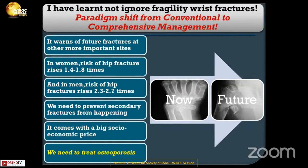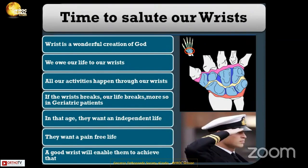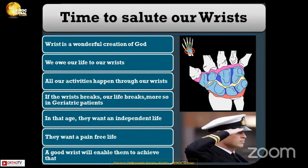We need to prevent secondary fractures — it comes with a big socioeconomic price. Medical-legal issues could also be a big problem: if a patient who had a wrist fracture develops a subsequent fracture of the spine or hip and we fail to treat osteoporosis, we may be in the dock. So it's time to salute our wrist. The wrist is a wonderful creation — all our activities happen through it. If the wrist breaks, our life breaks, more so in geriatric patients who want an independent, pain-free life. A good wrist will enable them to achieve that. Thank you very much — thank you to Ashok and to Global Waira for partnering with JAWSI in this academic pursuit.